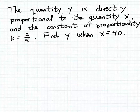In this example, we're told that the quantity y is directly proportional to the quantity x, and the constant of proportionality is k = 2/5. We want to find the value of y when x = 40.